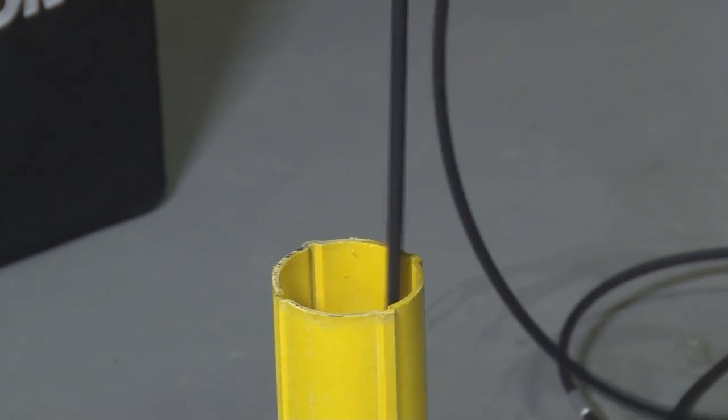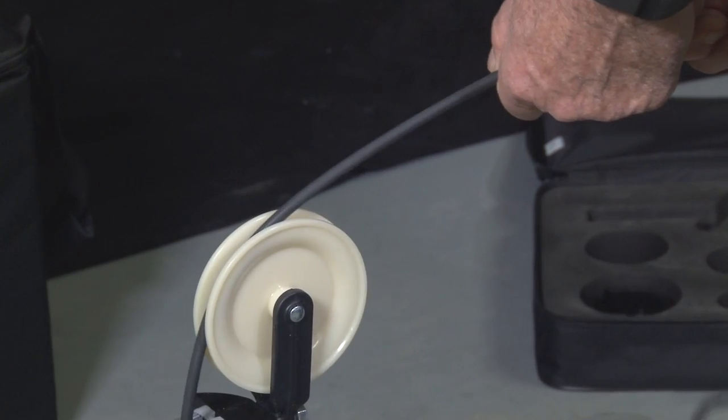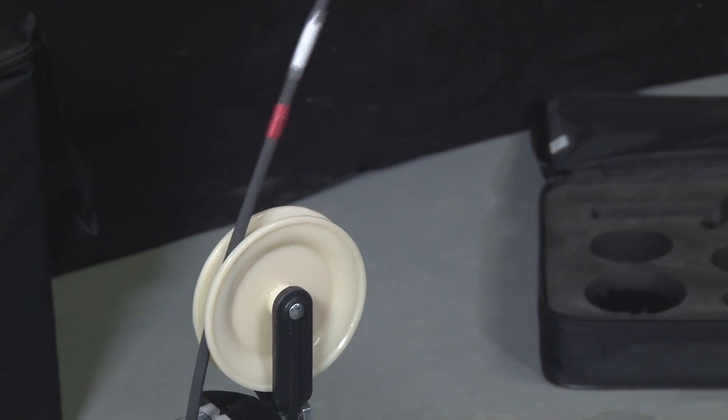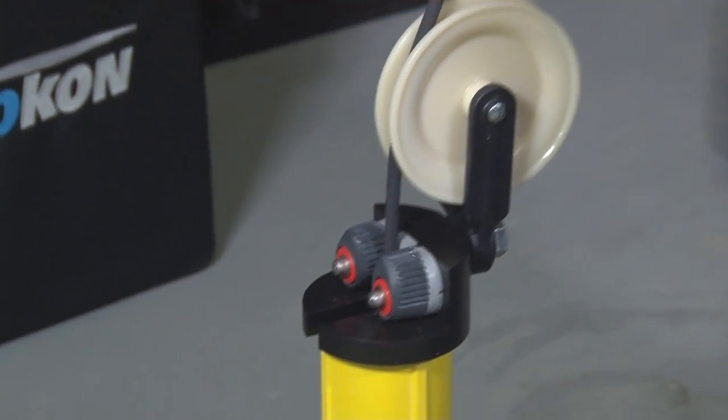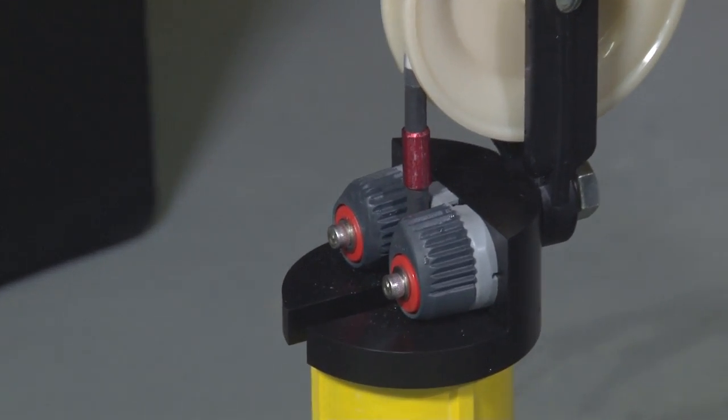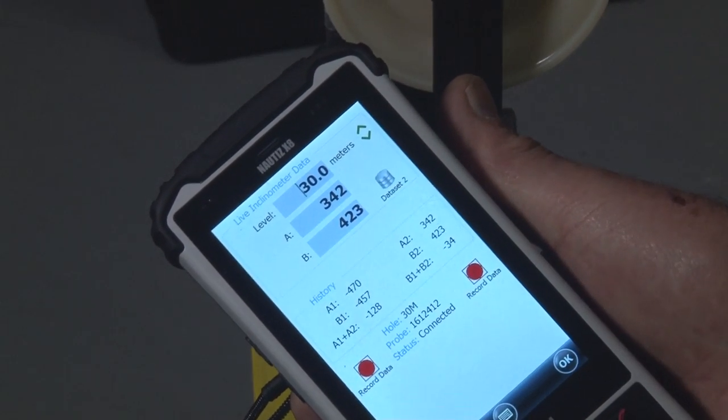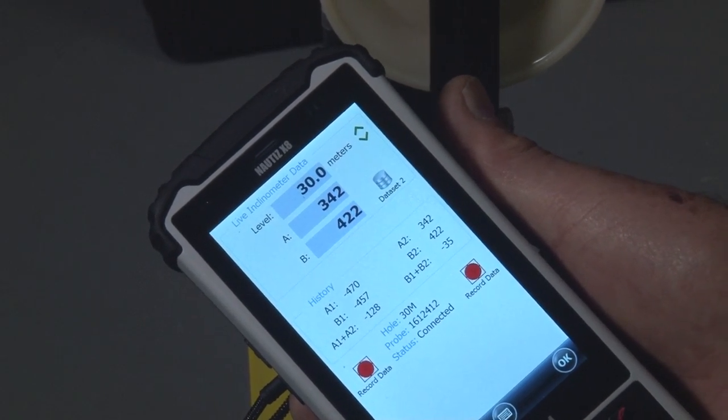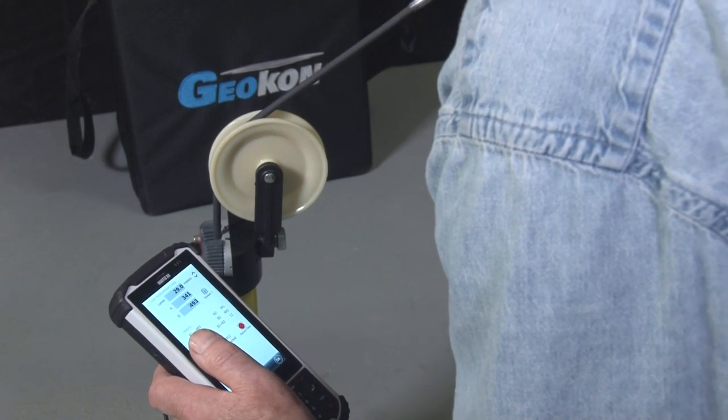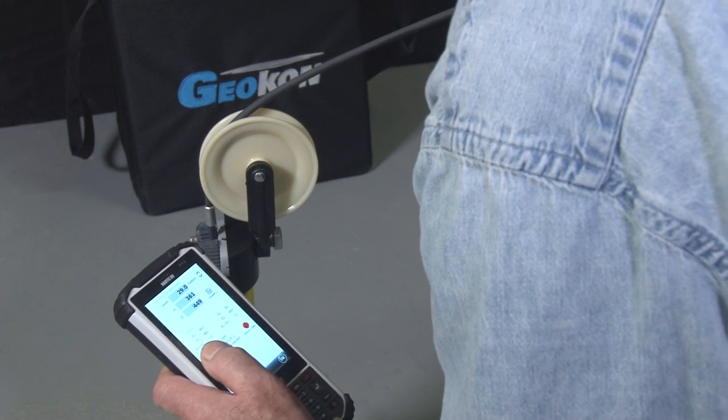The probe and cable should descend easily into the borehole. Again, take care not to crash the probe into the bottom of the borehole. Select Data Set 2 on the screen of the handheld PC. Then, proceed as before, recording data at each interval.